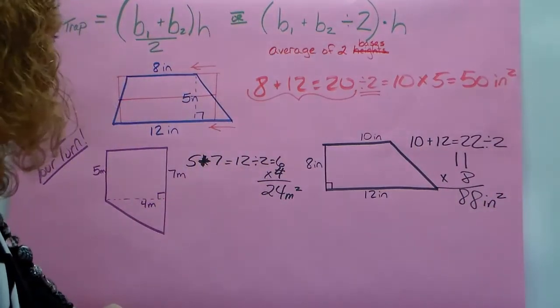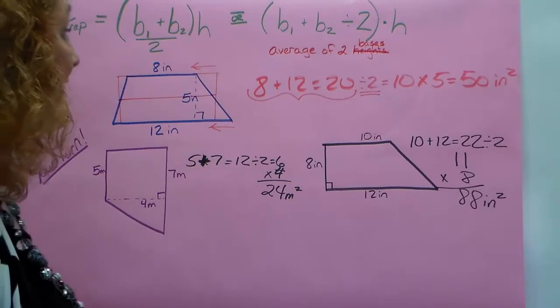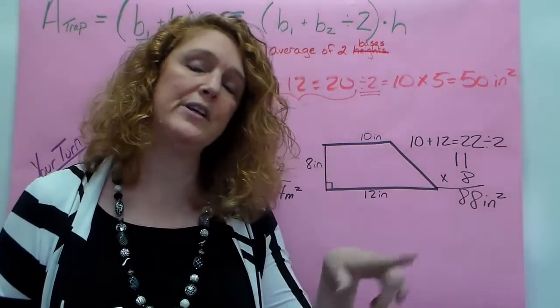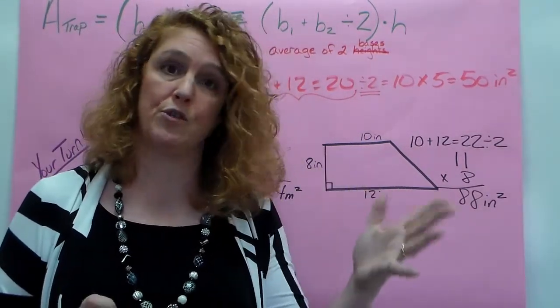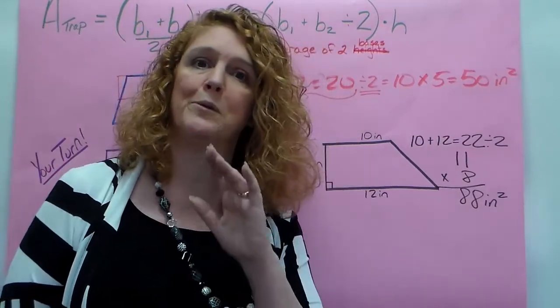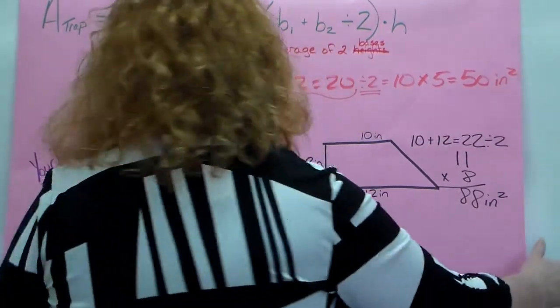88 inches squared. So that is how you find the average. You're probably not going to be asked to find the perimeter of a trapezoid just because they think you're freaked out about it and it's no problem. Okay, so here you go.